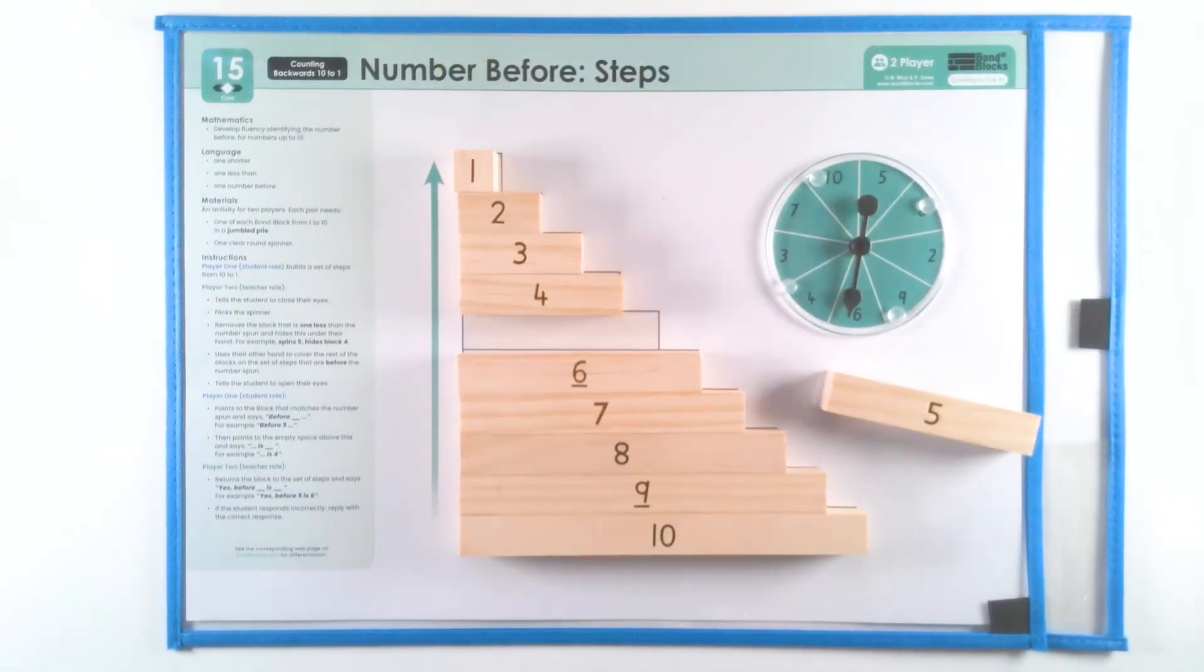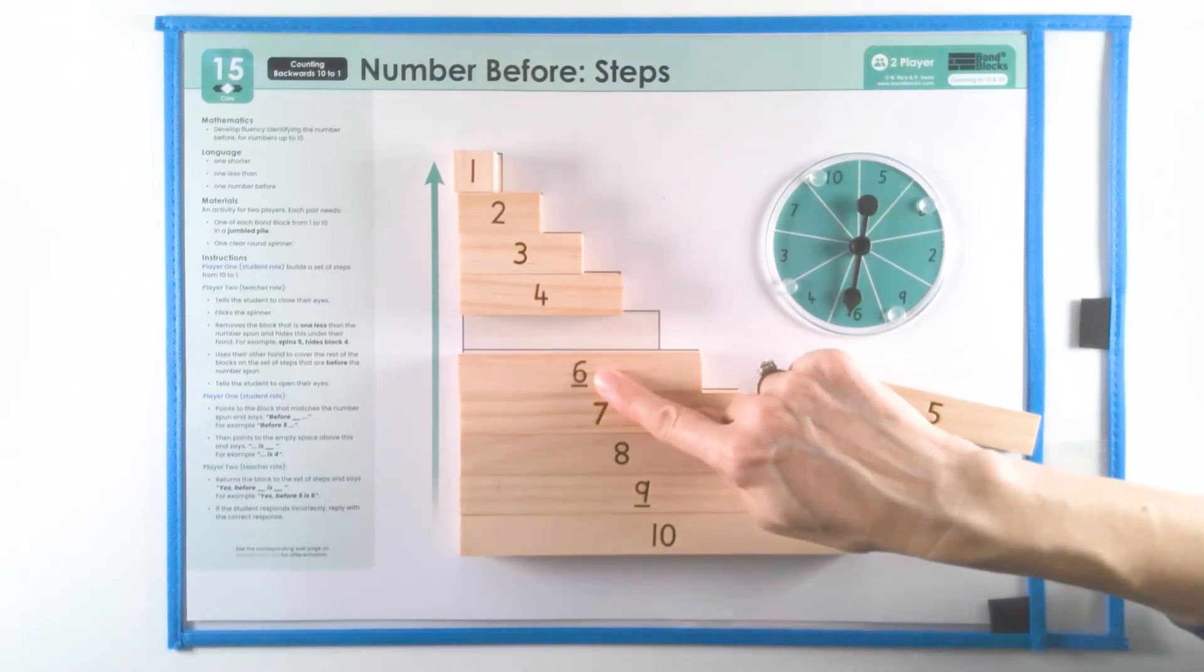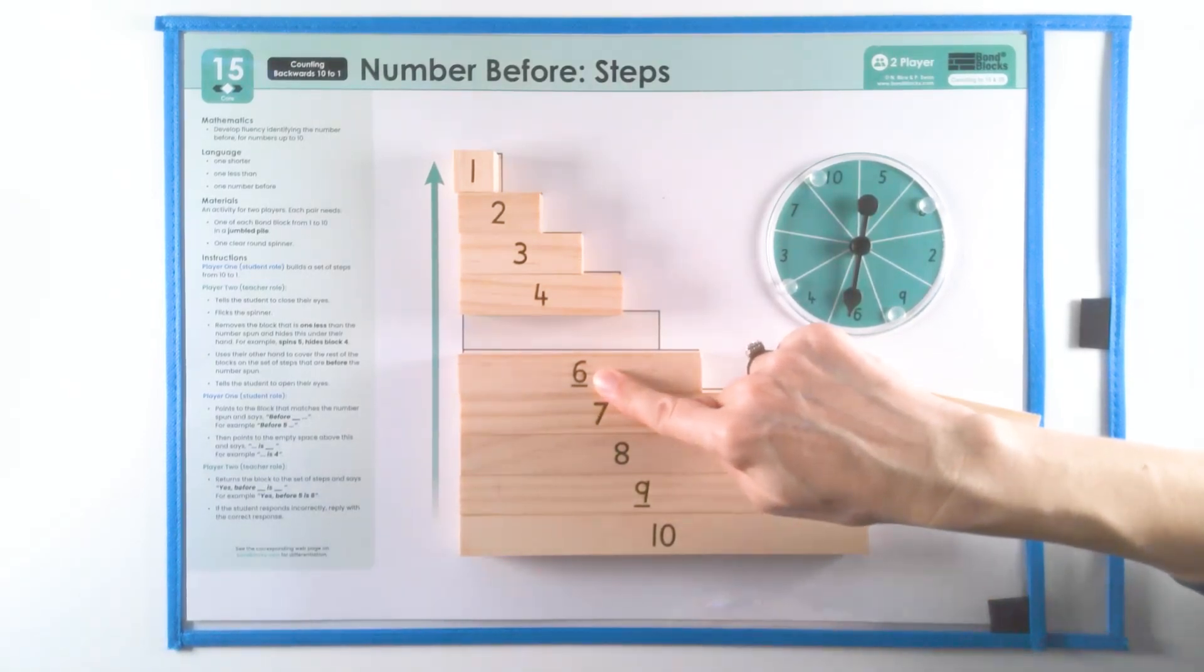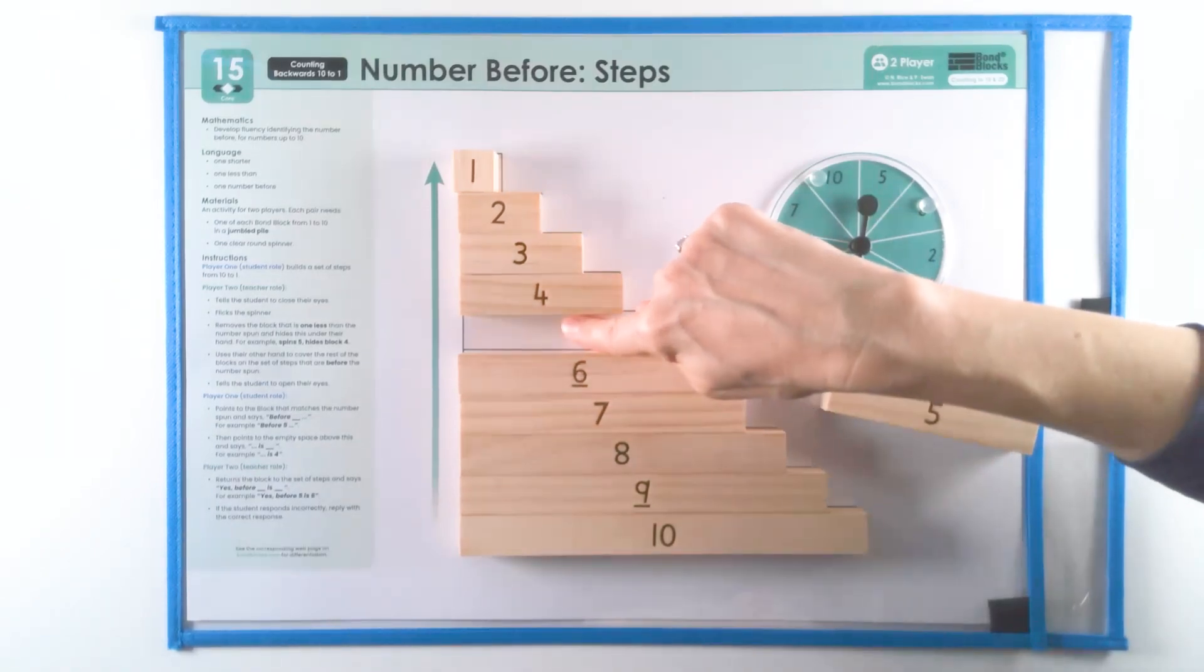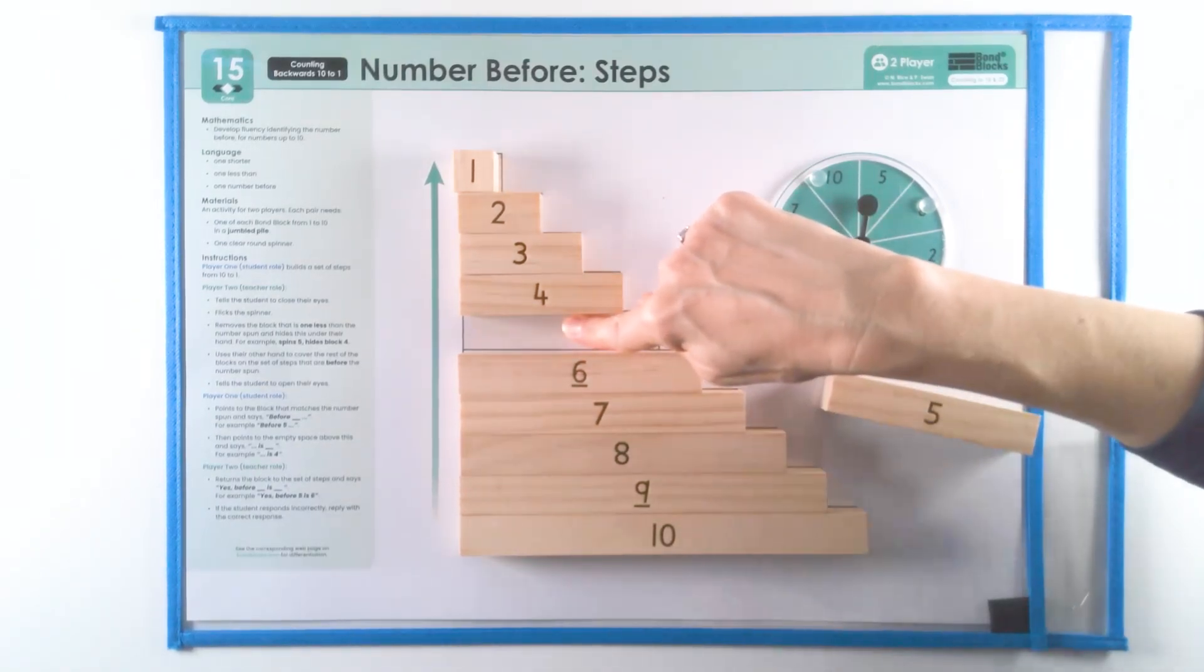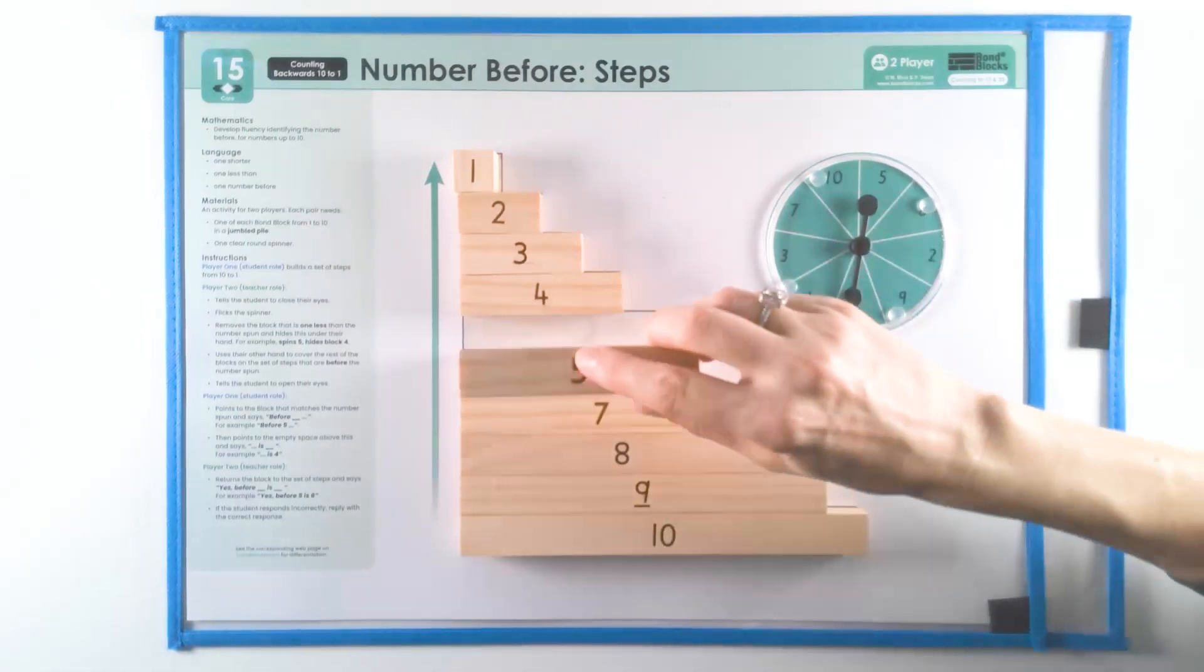The person who opens their eyes points to the number spun and says two words: before six. They point to the space and say two more words: is five, and then I'll return the block.